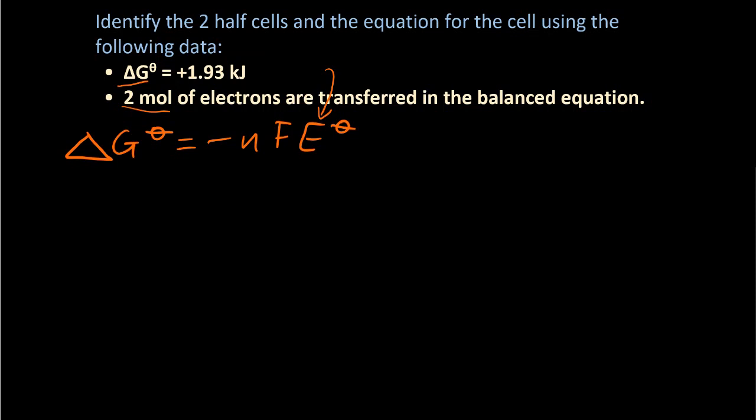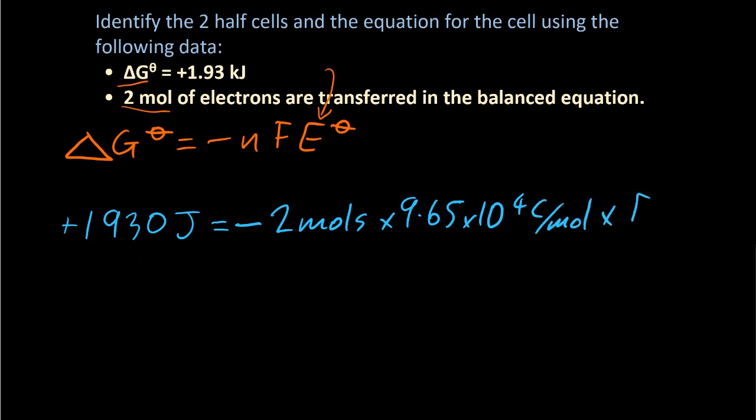So putting in the numbers, delta G theta is plus 1930 joules, got to convert to joules, minus n, well that's two moles. That's in the question. Faraday's constant, 9.65 times 10 to the 4, coulombs per mole. And that leaves you with the unknown E theta. So when you calculate E theta, you've got 0.0100 volts. That's the three significant figures. Not forgetting that dirty minus sign.